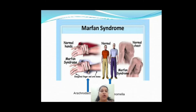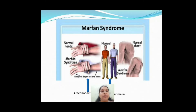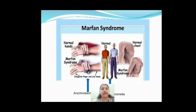The three deformities are: arachnodactyly, dolicostenomelia, and thoracolumbar scoliosis. Arachnodactyly means the fingers will be longer compared to a normal individual — you can appreciate this in the picture. Dolicostenomelia means the length of the limbs will be longer than the length of the trunk.